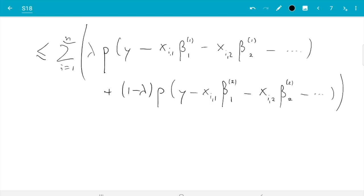And now we are done. Now we just split that into two expressions. So that equals lambda sum i from 1 to n rho and then that expression with beta 1 plus 1 minus lambda sum i from 1 to n rho that expression with beta 2. And you see these expressions are what we call S.